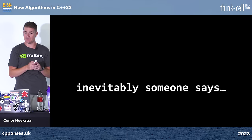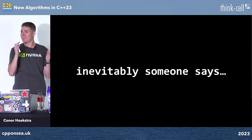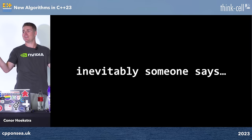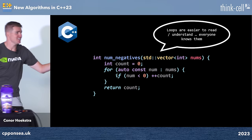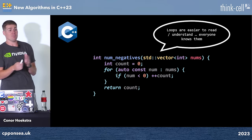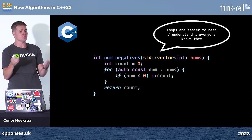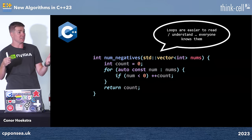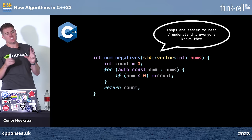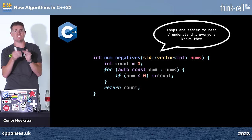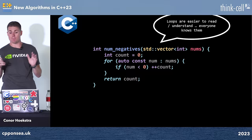Whenever I refactor a for loop into an algorithm in talks like this, someone inevitably says 'loops are easier to read — everyone knows what they are.' I disagree: we're professionals and should learn our libraries. Algorithms let us abstract, parallelize, and express intent more clearly. For counting negatives, you can argue the for loop is fine. But for the next problem — Sushi for Two — you really cannot make that argument.